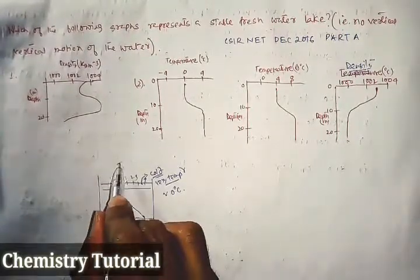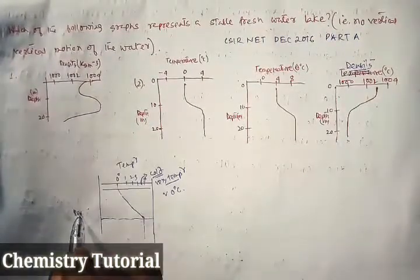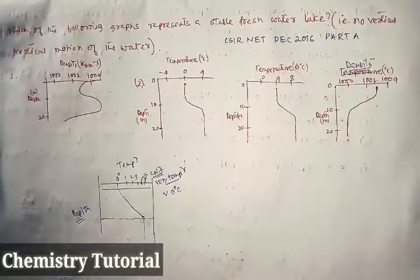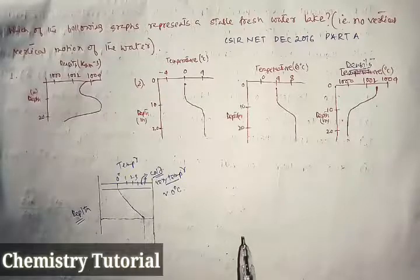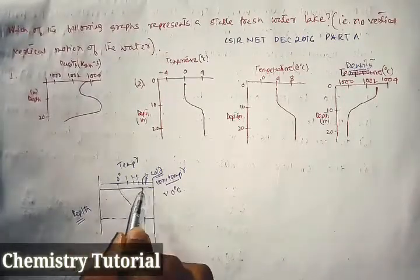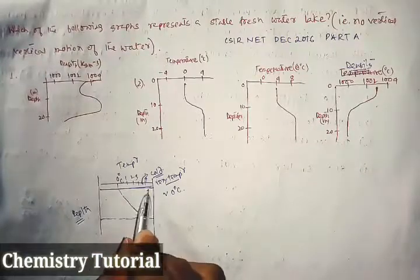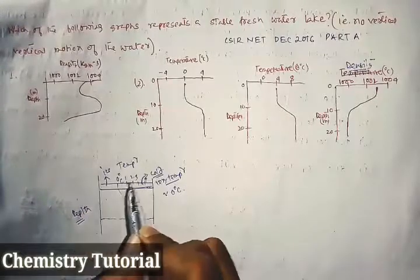This is the temperature versus depth graph for a freshwater lake. Since at the surface the temperature is 0 degrees Celsius, it will be ice, so density will be less at the surface.